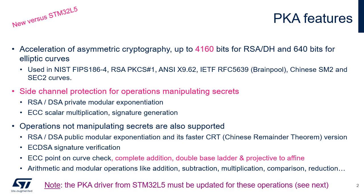The PKA module is an efficient hardware accelerator that speeds up the public key cryptography operations performed by the CPU. It accelerates Rivest, Shamir, and Adelman, or RSA, Diffie-Hellman, or DH, as well as Elliptic Curve Cryptography, or ECC, over prime-field operations.